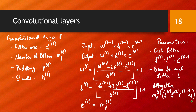An important observation is that this number of parameters is independent of the input size. This is one of the key arguments for why convolutional networks are so popular, especially in image processing. If you successfully train a convolutional neural network to learn certain patterns in an image, you can apply that same network to other images no matter how large they are. The same network with the very same parameters can be applied to images of arbitrary size.